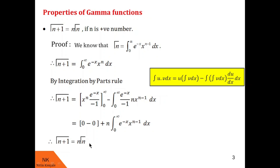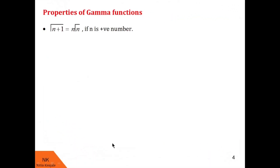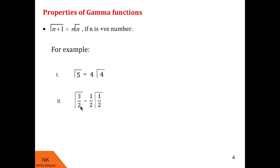Now let me show you how to use this property with some examples. Gamma of 5 can be written as 4 into gamma of 4, since n plus 1 is 5 so n is 4. Similarly, gamma of 3 by 2 can be written as 1 by 2 into gamma of 1 by 2, since n plus 1 is 3 by 2 so n is 1 by 2.